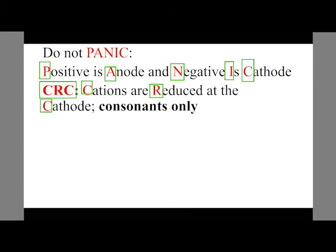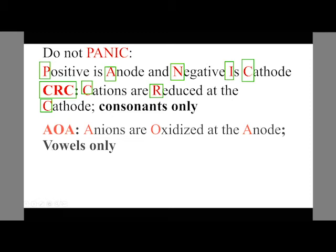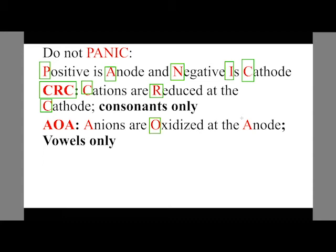And we also have AOA where we have anions are oxidized at the anode. I repeat, anions are oxidized at the anode. We have AOA. You can see it is vowels only. So when you don't mix these vowels and consonants, you make sure that you know what happens at each electrode.